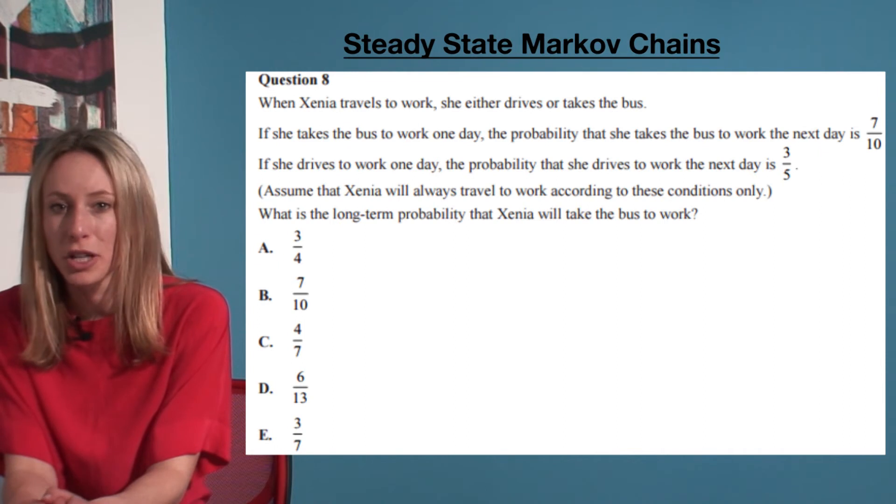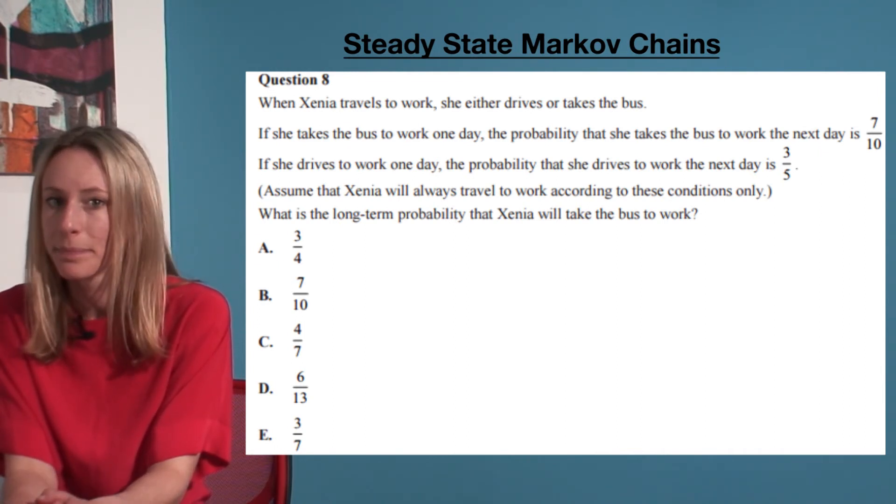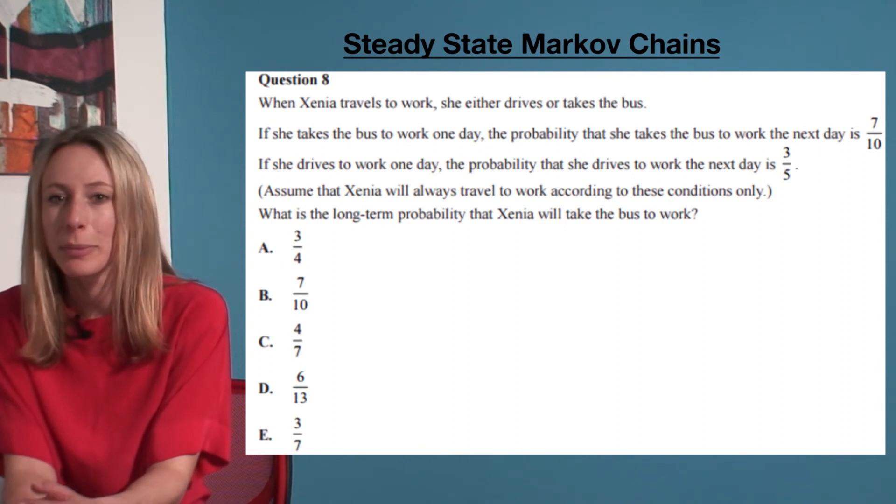As soon as we are asked about the long-term probability, we know we need to find the steady state of a Markov chain. If we choose state one to be that she takes the bus and state zero to be that she drives, we just need to find our a and b terms.